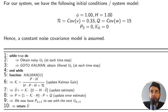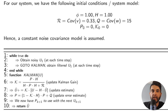Here is the pseudocode for the Kalman filter showing how to implement it in C++ or any other language. The idea is to first obtain the noisy measurement at each time step, then call your Kalman filter function, which updates the Kalman gain, updates the estimate, and returns the estimated value.